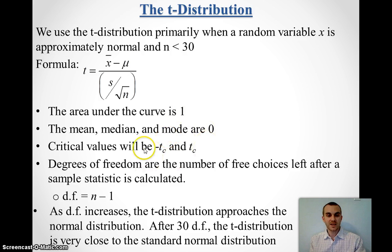Now, instead of z-scores, we're going to be looking at t-scores for our critical values, and we now have to deal with what's called the degrees of freedom. And these are the number of free choices that we have left after a sample statistic is calculated. For the t-distribution, the degrees of freedom is the sample size minus 1.